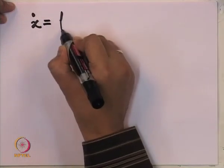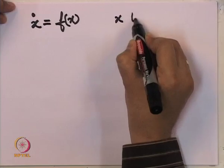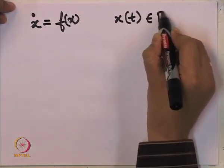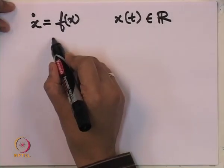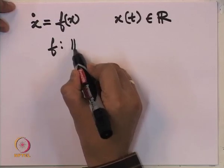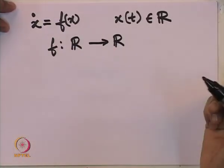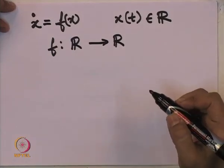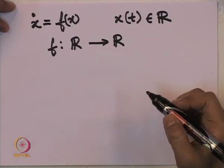Hello everyone, welcome to the second lecture on nonlinear dynamical systems. Today we will continue with first order systems — first order meaning the variable x has only one component. We were dealing with the differential equation x-dot equal to f, where x at any time instant had only one component, in other words it was a real number. So f is a map from real numbers to real numbers; more generally it was a map from Rn to Rn, but because x has only one component we have a map f from R to R.